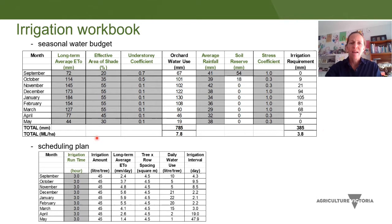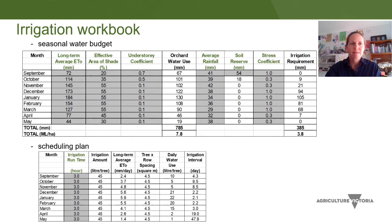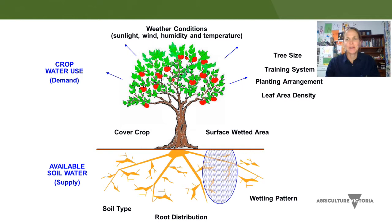Likewise with the scheduling plan, there's certain information that you put in that's specific to your orchard, and you can run a few different scenarios to see what the impact of a different emitter rate or run time would have on your scheduling within the season. When you schedule irrigation — whether you're doing it purely by experience or with some form of decision support — you're taking into account a whole range of factors: weather conditions, crop type, fruit growth stage, tree size, understory conditions, soil type, and emitter type. All these things influence when and how much you irrigate.